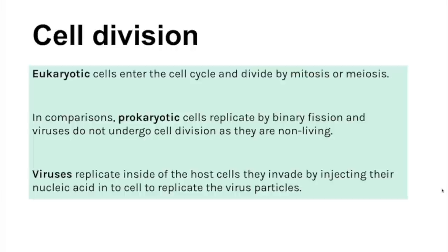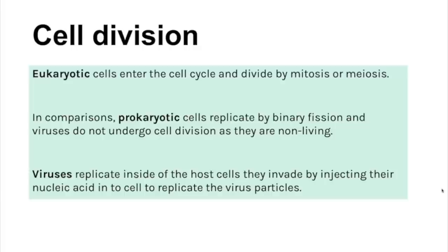Eukaryotic cells enter the cell cycle and divide by mitosis or meiosis, but in topic one you only learn about mitosis. Prokaryotic cells replicate by binary fission. Viruses do not undergo cell division because they are non-living, but they do still replicate — viruses replicate inside a host cell by injecting their nucleic acid (genetic material), and the host cell then uses that genetic material to replicate the virus particles.